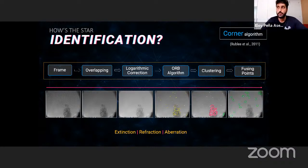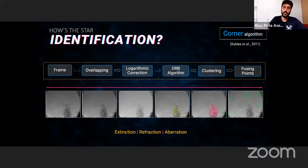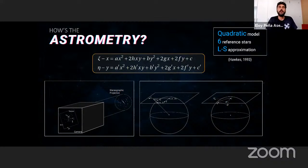We apply refraction, aberration, and extinction corrections, then query the JPL Horizons database for the real sky positions of these stars. Once we have a set of identified stars, we need to find a transformation between their pixel positions and their topocentric equatorial coordinates.